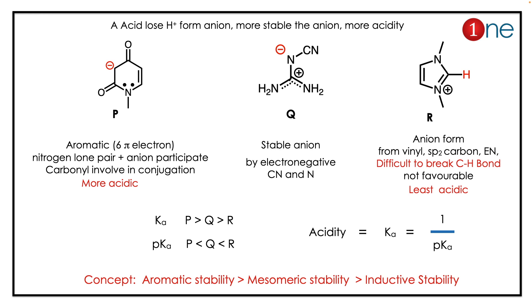Looking at the first compound P: once it loses H⁺, it forms an anion that is very stable because of aromaticity — the lone pair on the anion completes aromaticity. Compound Q has an anion stabilized by the cyanide group and nitrogen.